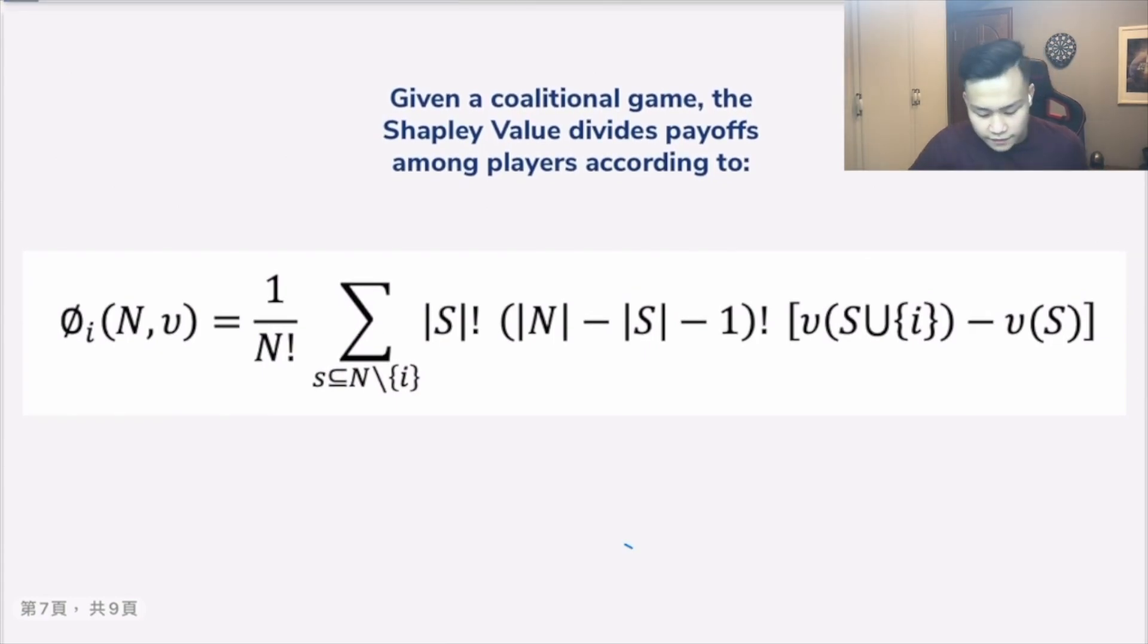Finally, we arrive to this Shapley value rule, which is that Shapley basically tells us how we should divide payoff among different players. This equation may seem a little bit daunting, but the logic behind it is actually fairly intuitive. Here we're seeing that for a coalitional game with N players and a payoff function associated with it, the given payoff for player i would be calculated by the following way.